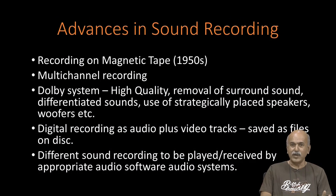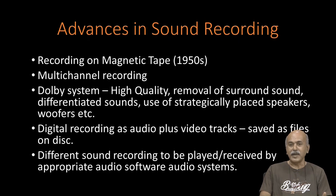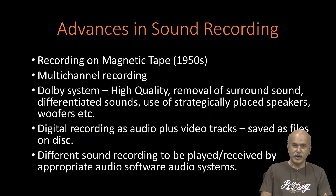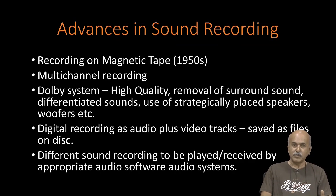Let us look at advances in sound recording over a period of time. One major, path-breaking advance was the invention of magnetic tapes to record sound more efficiently. These magnetic tapes were strapped onto the film on both sides, and were more efficient than the grooves made earlier. This was followed by multi-channel recording. We know about stereophonic sound; you could have even more channels, and it requires a good sound system to play these. These first major advances came in the 1950s.